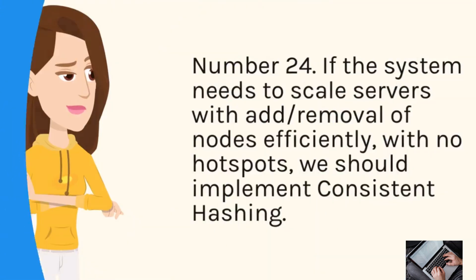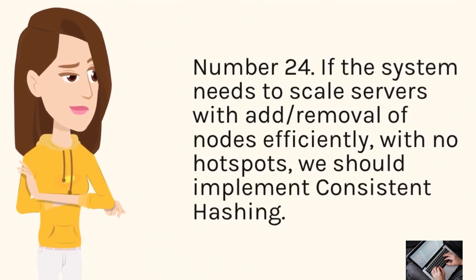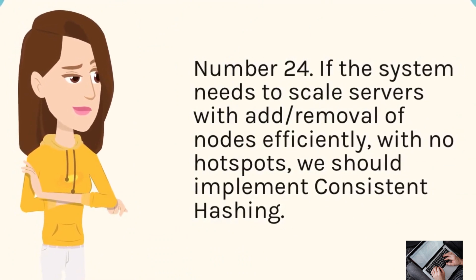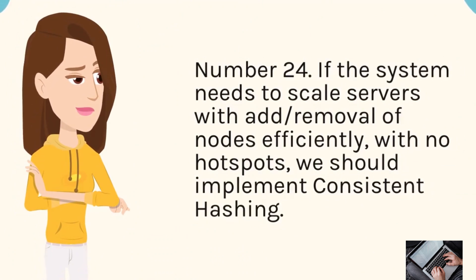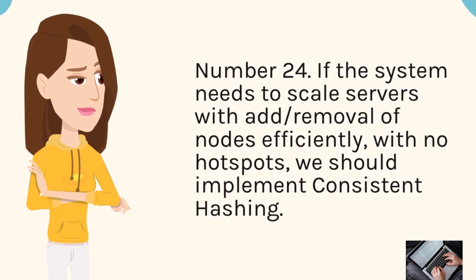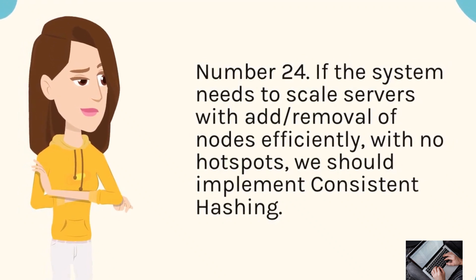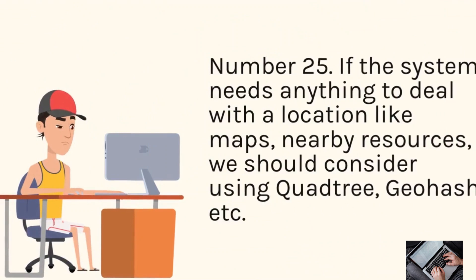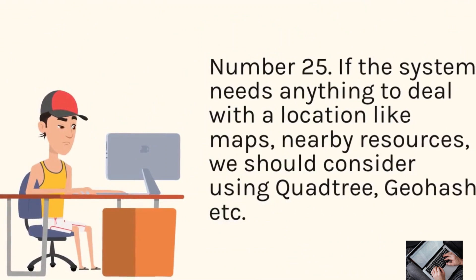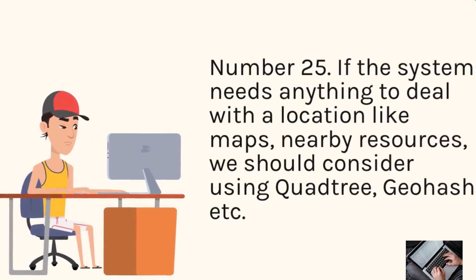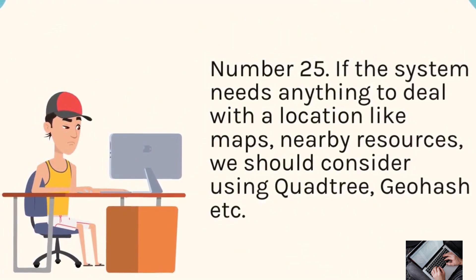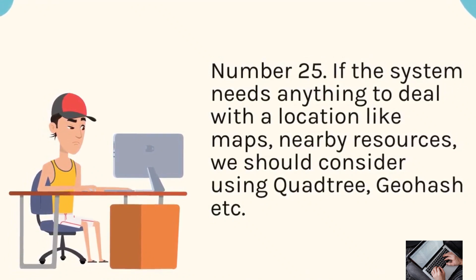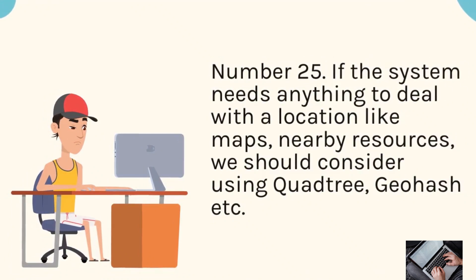Number 24: If the system needs to scale servers with add/removal of nodes efficiently, with no hotspots, we should implement consistent hashing. Number 25: If the system needs anything to deal with location, like maps or nearby resources, we should consider using QuadTree, GeoHash, etc.